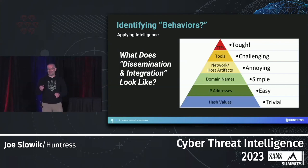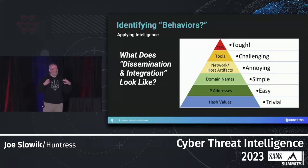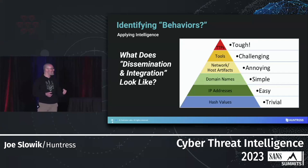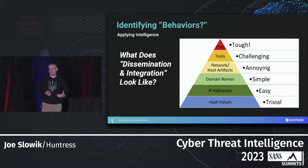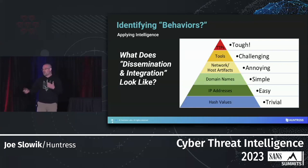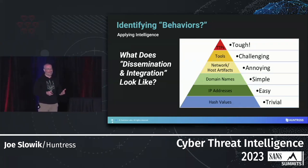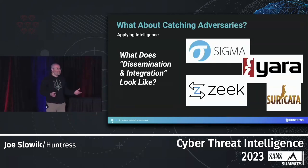We could talk about behaviors — look at the pyramid of pain. TTPs: what the hell are those? No one really has an idea of what that means, let alone how you translate TTPs into something actionable. Most of the time TTPs just end up as a slightly shorter report with no good way of getting ingested into a tool or decision-making cycle. So behaviors are cool, but if I'm supporting tactical decision-making in the SOC and IR engagements, what am I really doing here?